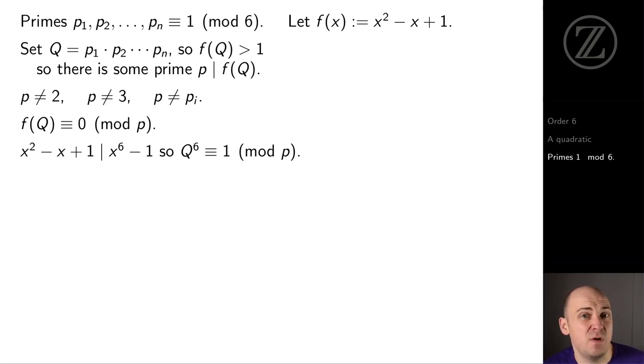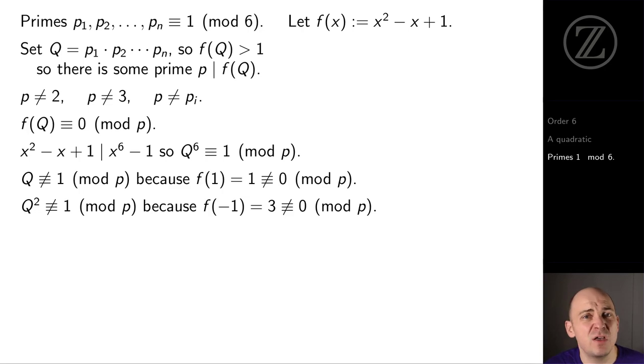Now, could it be that Q is 1 mod p? No, because then we would have Q squared minus Q plus 1 is 1 squared minus 1 plus 1 is 1, and 1 isn't 0. Could it be that Q squared is 1 mod p? Well, we already saw that Q isn't 1 mod p. So if Q squared is 1 mod p, then Q would be minus 1 mod p. But evaluating f of minus 1, that equals 3 and p is not 3.